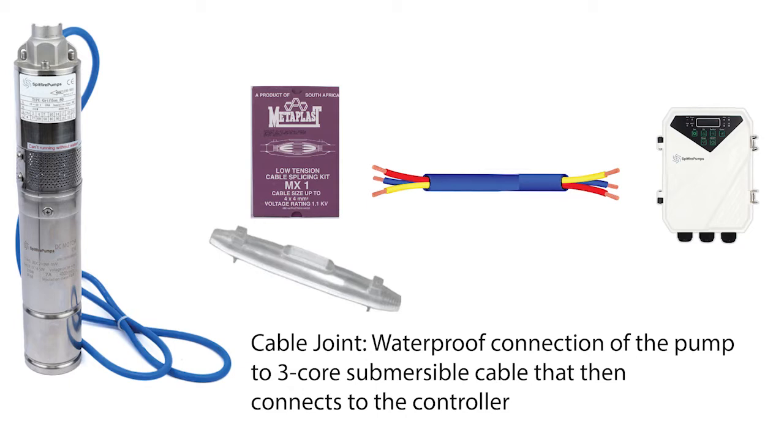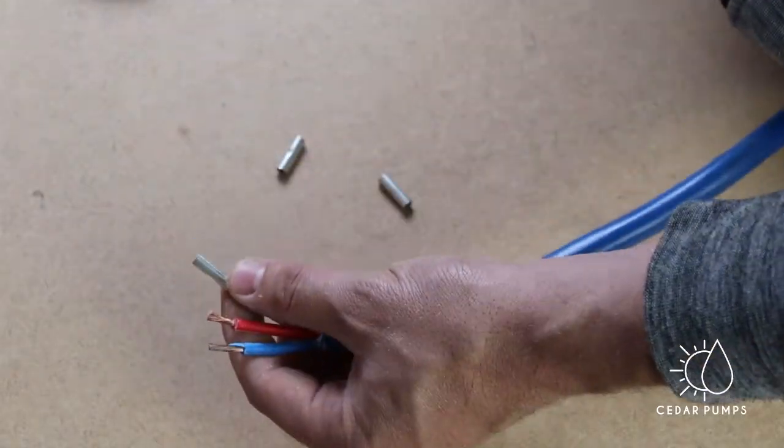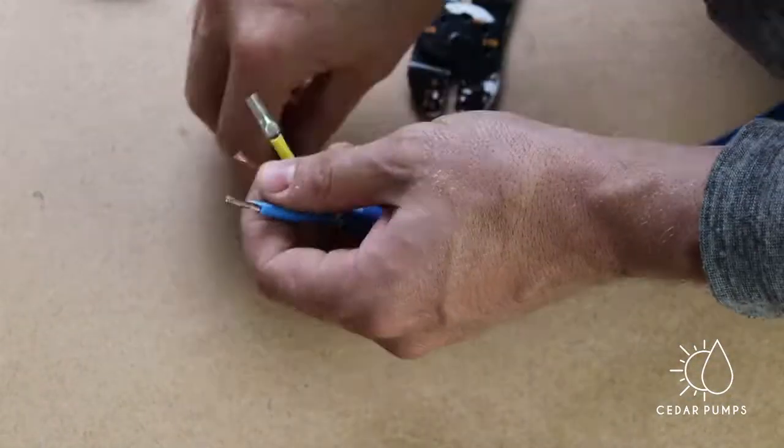A cable joint is a waterproof connection of your pump power cable to submersible 3 core cable. First step is to crimp some ferrules to the submersible cable.